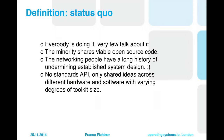The status quo: everybody's doing userland networking but very few people talk about it. The minority shares viable open source code, which is not a good thing. For the last six or seven years, people have not pushed operating systems considerably in this direction because of that. There's also a proud history of networking people undermining established system design — we need to get the kernel out of the way, be more flexible. And there is no standard API, only shared ideas across different hardware and software.